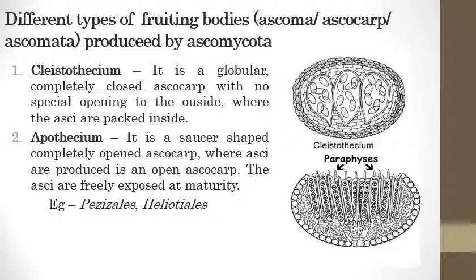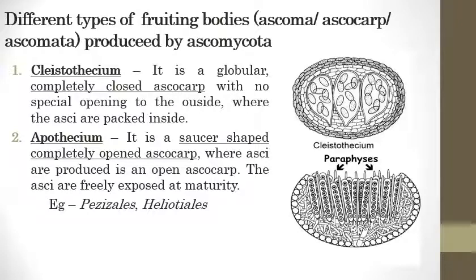If you have a doubt about how the spores are released from the Cleistothecium: upon maturation, the walls get dissolved and the spores burst and are released out. This is how Cleistothecium works — it is a completely closed ascocarp.